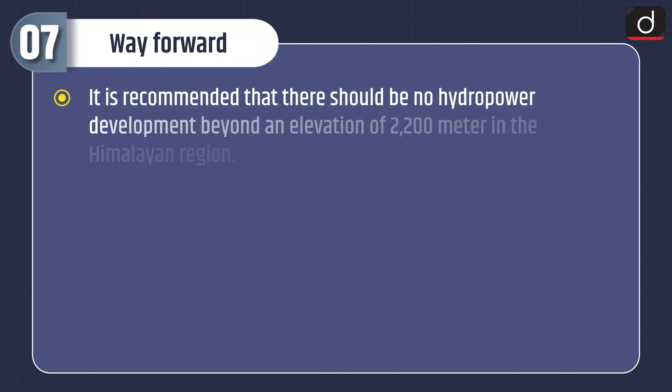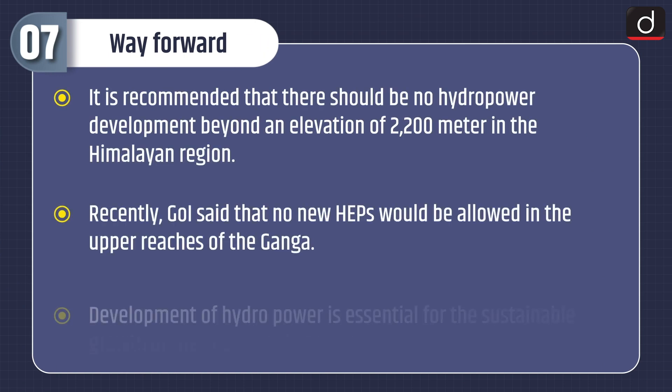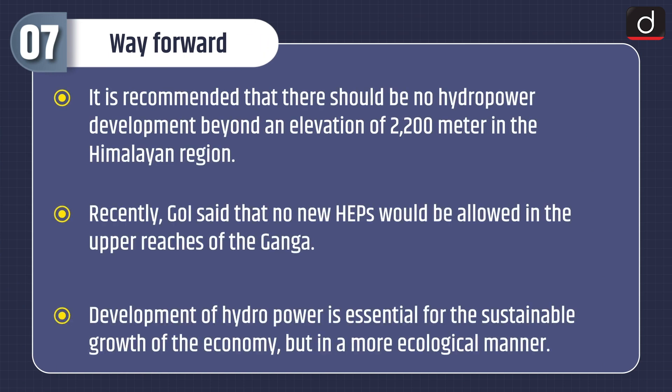Lastly, let's discuss the way forward. It is recommended that there should be no hydropower development beyond an elevation of 2200 meters in the Himalayan region. Recently, the Government of India said that no new HEPs would be allowed in the upper reaches of the Ganga. Development of hydropower is essential for the sustainable growth of the economy, but in a more ecological manner.